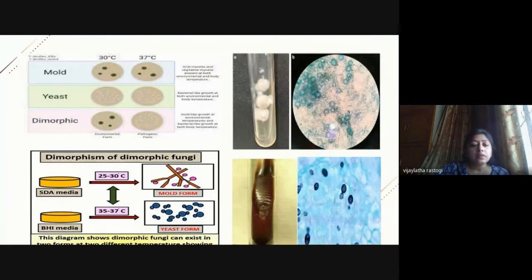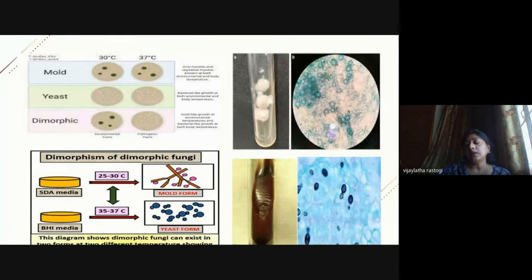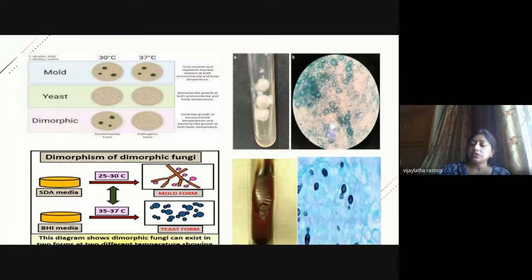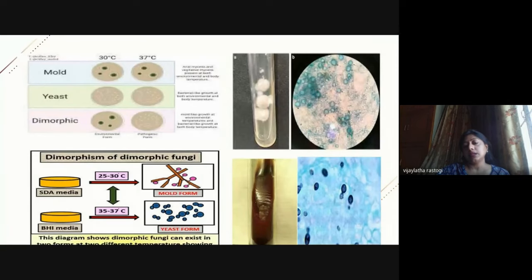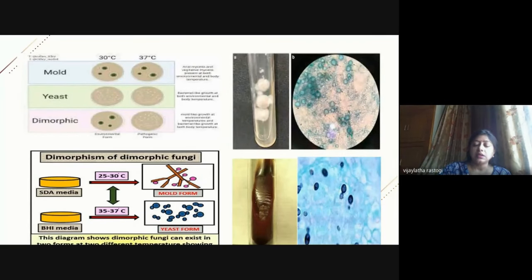An example of dimorphic fungi: on SDA at 30°C, a mold form grows showing filamentous fungi. A tease mount reveals tuberculate macroconidia, suggestive of Histoplasma capsulatum—a very dangerous dimorphic fungus. When the same sample is inoculated on BHI (brain heart infusion) agar at 37°C, yeast forms appear. An LCB mount then reveals beautiful small budding yeast. These organisms are hazardous to work with in the laboratory.